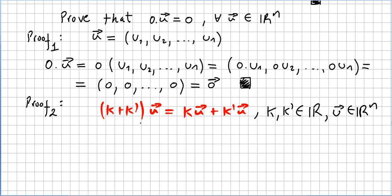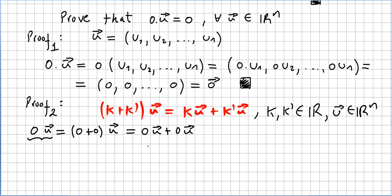Let us use this already-proved proposition — this is also typical of mathematics: first you prove a proposition, then you use it to prove another. So what is 0 times u? Well, 0 times u, using the distributive proposition already proved, is the same as (0 + 0) times u, which equals 0 times u plus 0 times u.